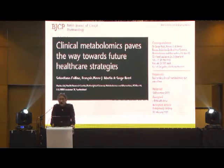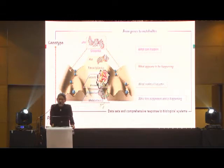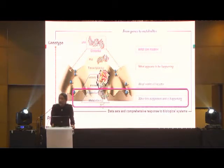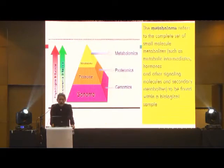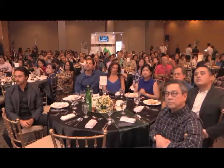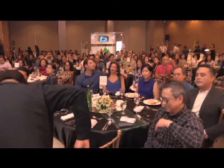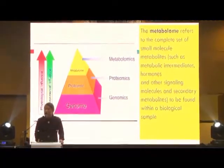Clinical metabolomics paves the way for future healthcare strategies. I chose metabolomics to be the primary module for health optimization medicine because DNA in genomics can tell us what can happen, RNA in transcriptomics can tell us what appears to be happening, proteins in proteomics can tell us what makes it happen, but it's only the metabolites of metabolomics that can show us what has happened and what is happening. A metabolome refers to a complete set of small molecule metabolites, such as metabolic intermediates, hormones, and other signaling molecules found within a biological sample. The farther you get from genomics, the more you can see the effects of physiology and environment on the individual.